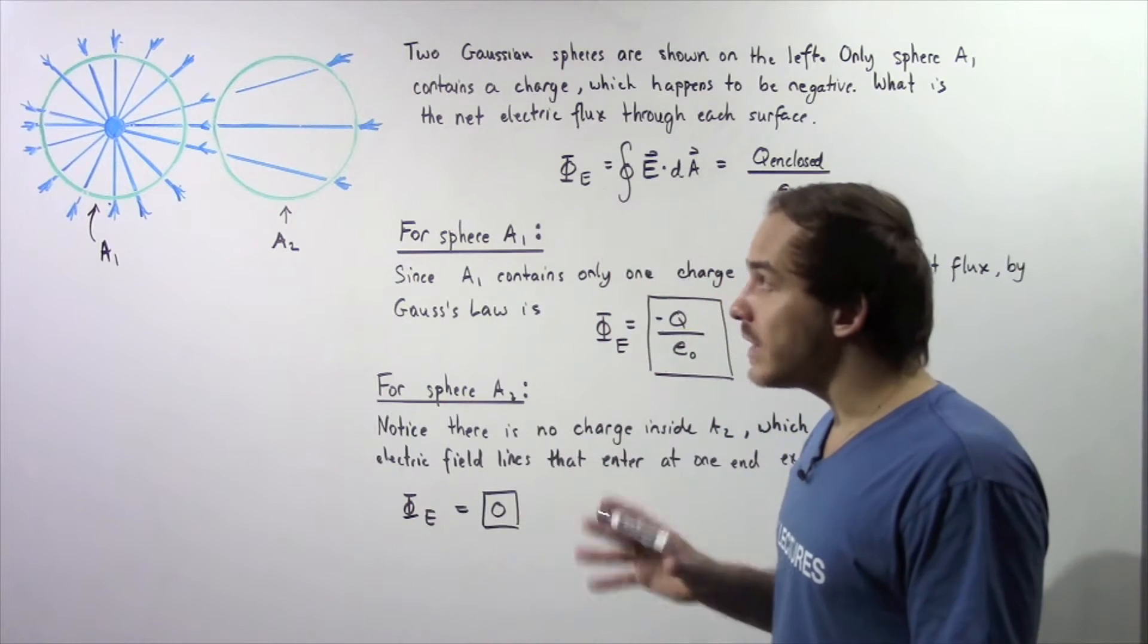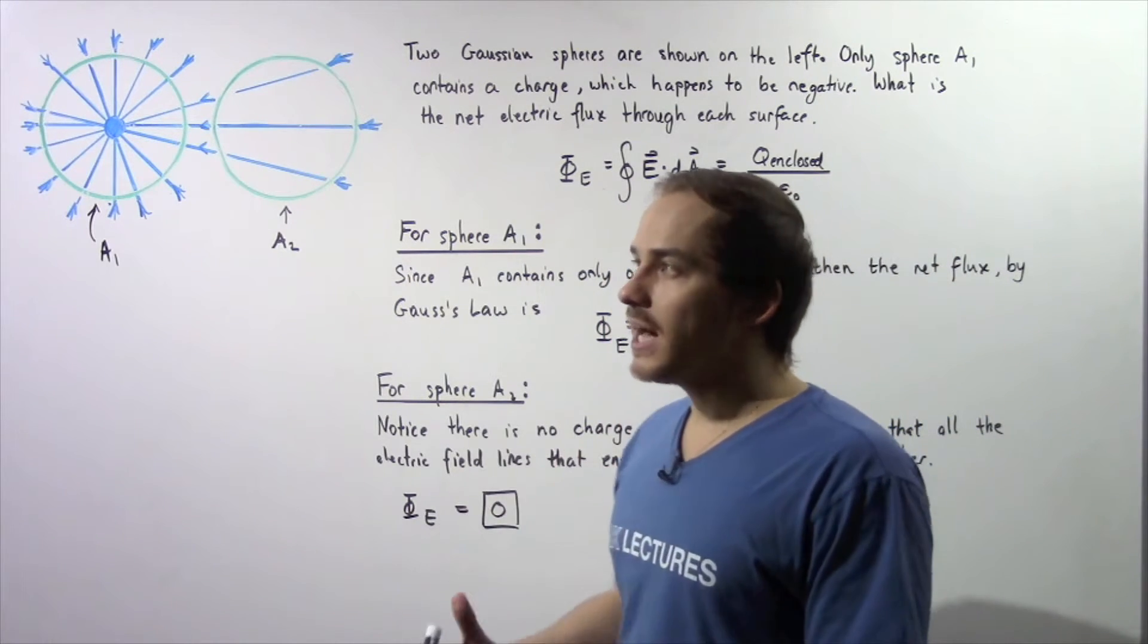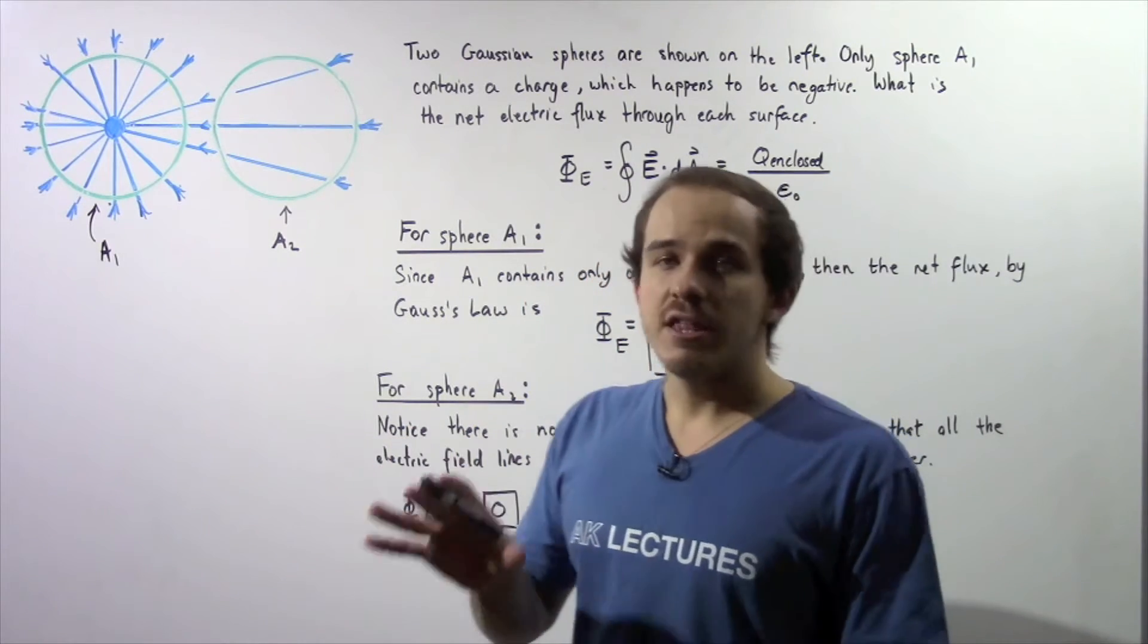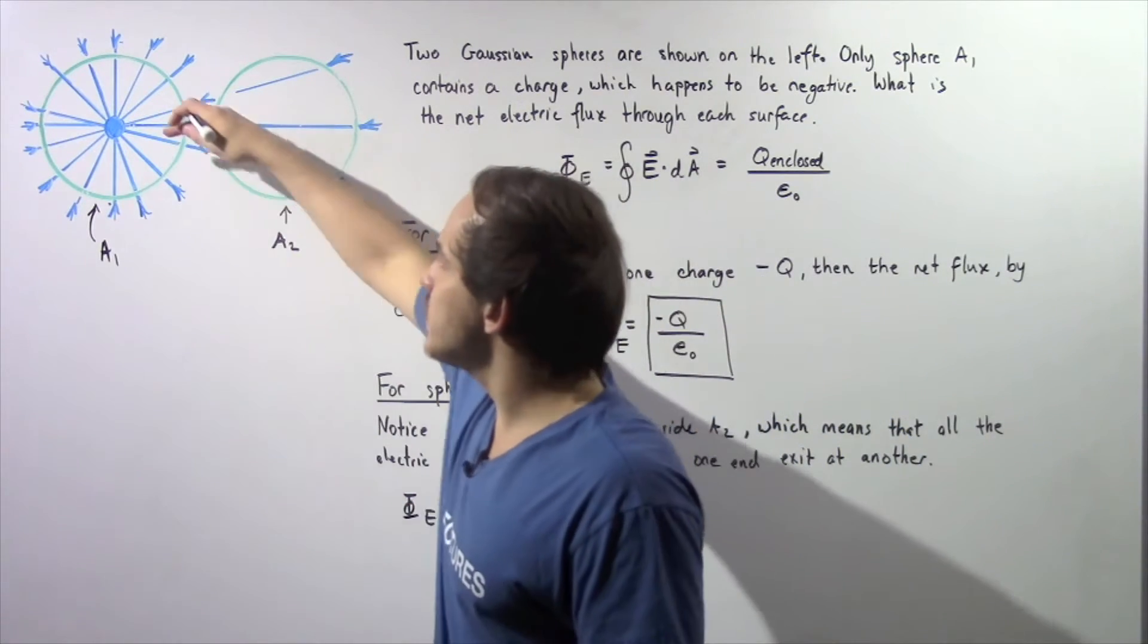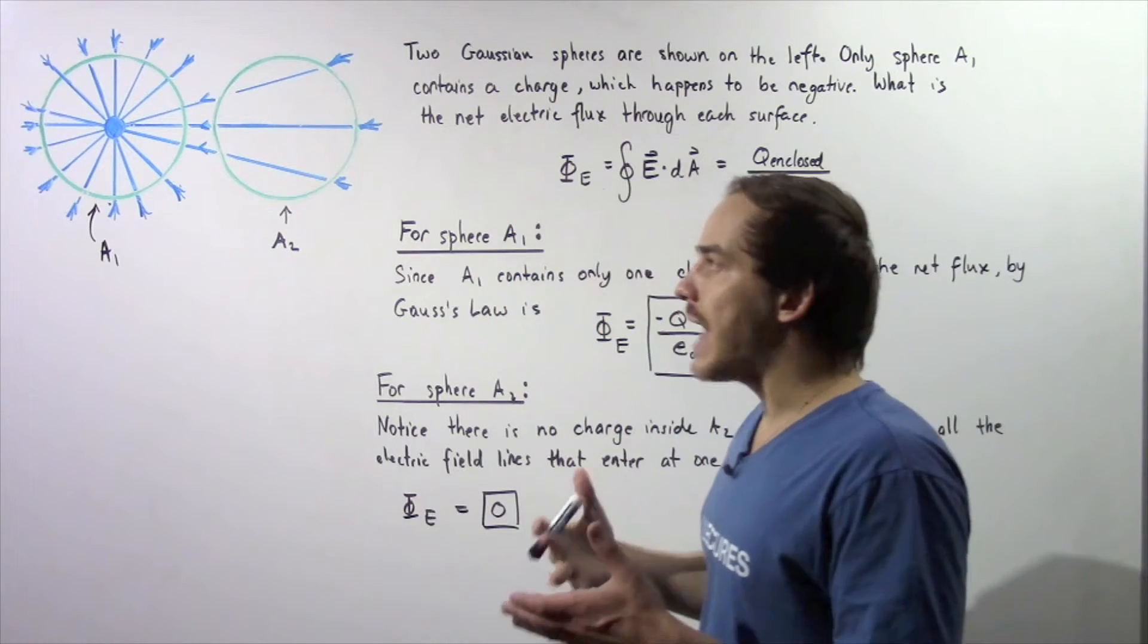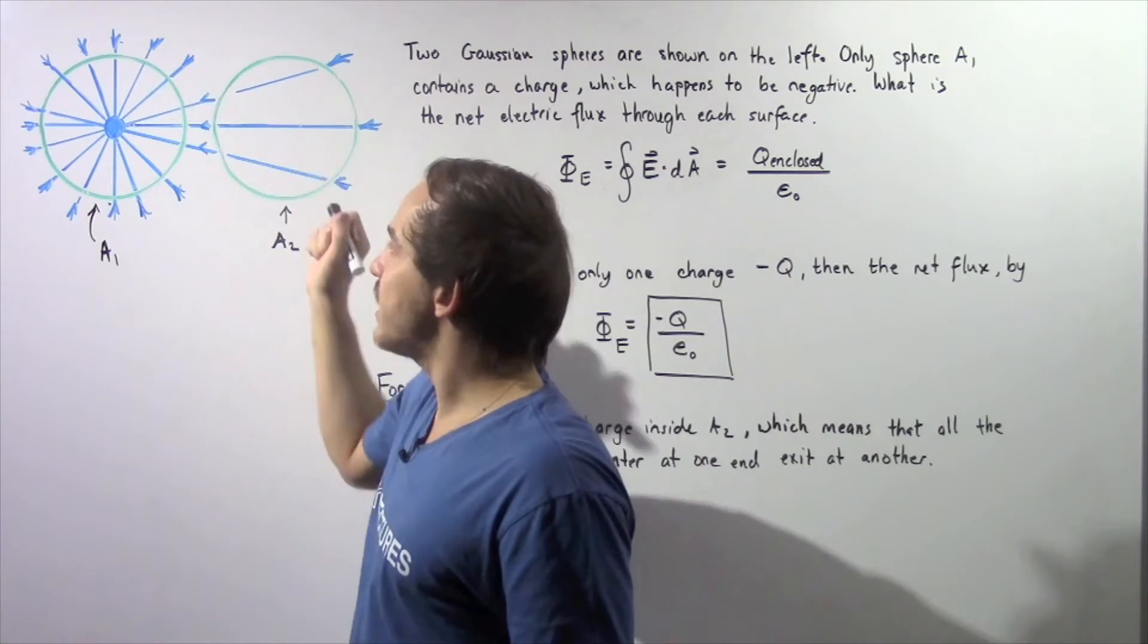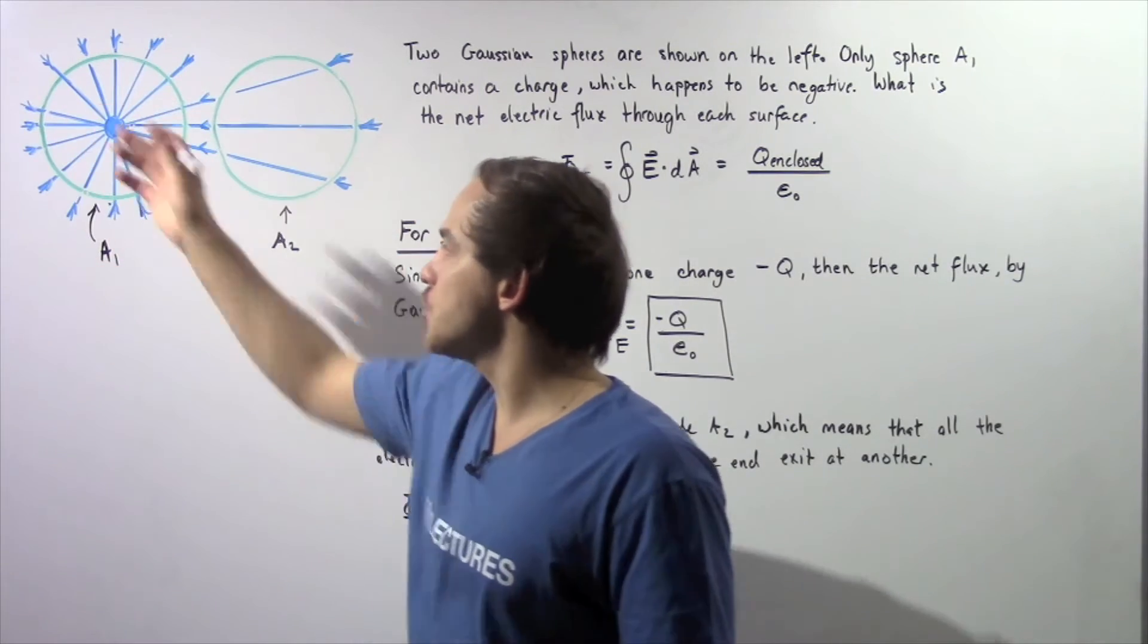Now, because electric field lines begin on the positive charge and always end at the negative charge, that means our sphere will look something like this. So, all our electric field lines will end at this point, and they will extend outward as shown.